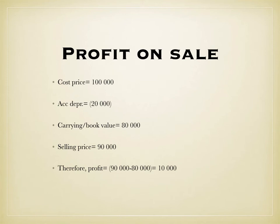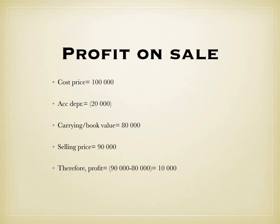To determine profit on sale: cost price is 100,000, accumulated depreciation is 20,000, giving a carrying value of 80,000. If you sell the asset for 90,000, the profit is 90,000 minus 80,000, which equals 10,000. We measure the asset's value using carrying value — that's the real worth at the point of sale. A profit occurs when the selling price is greater than the carrying value.